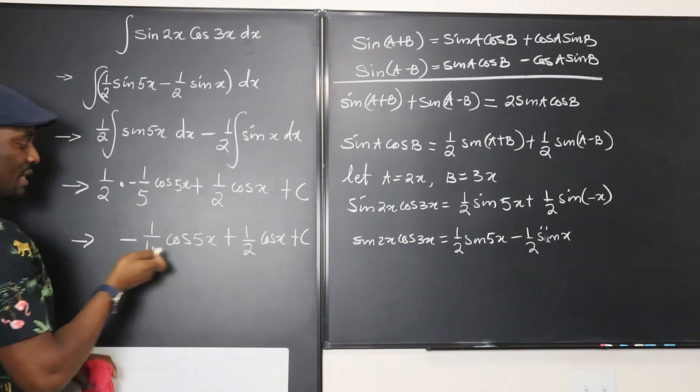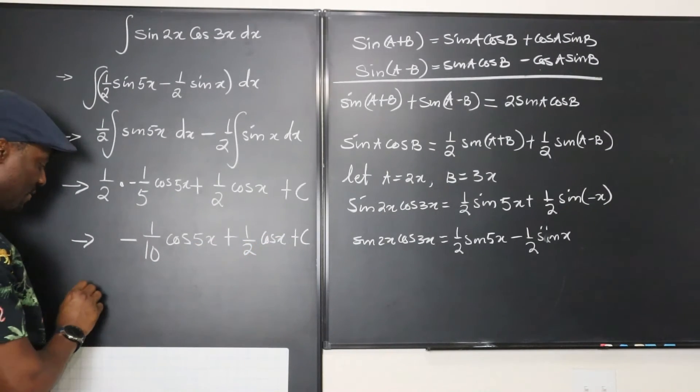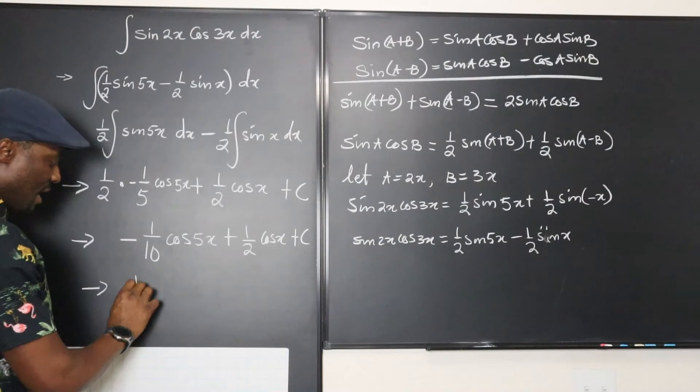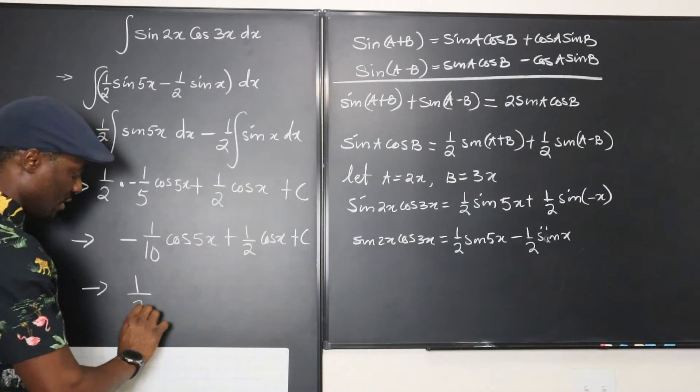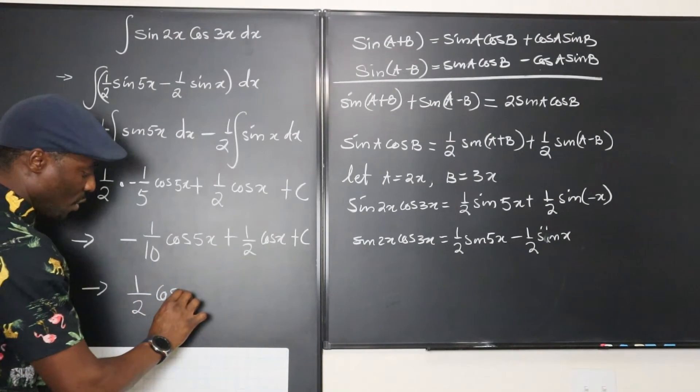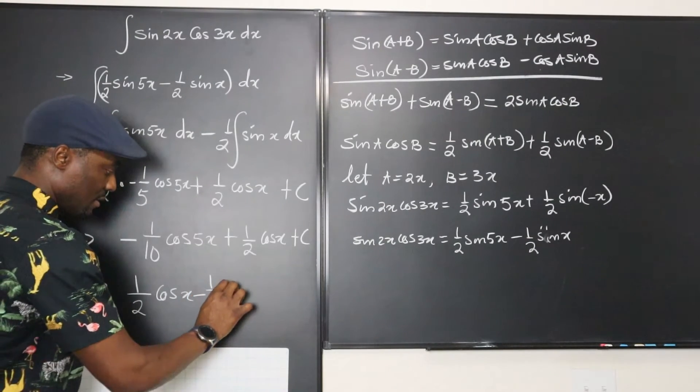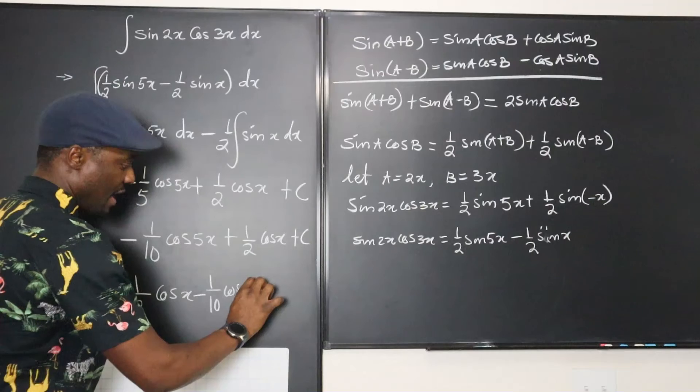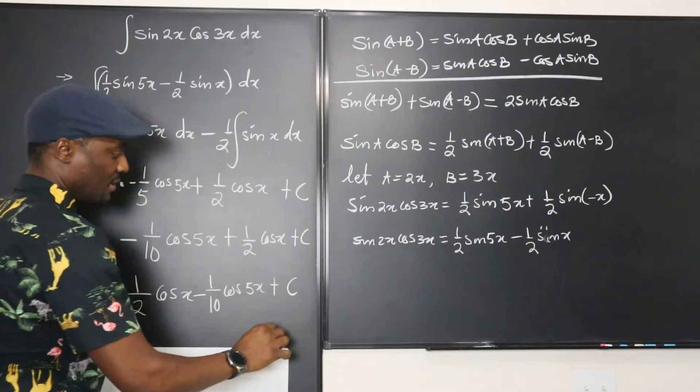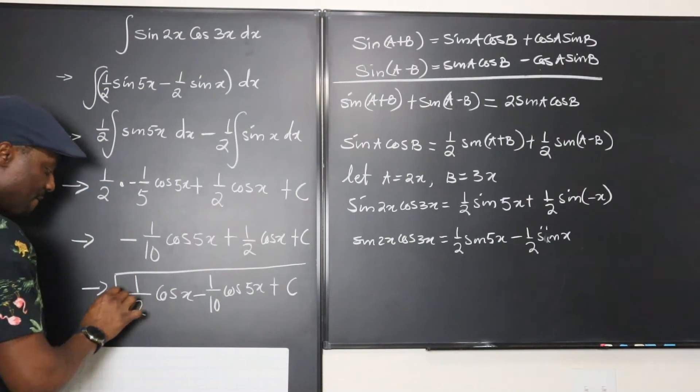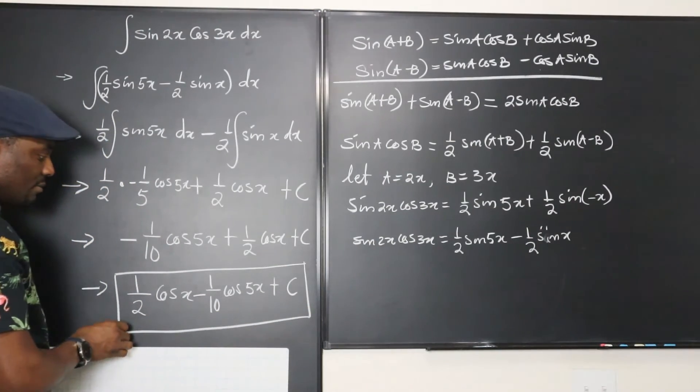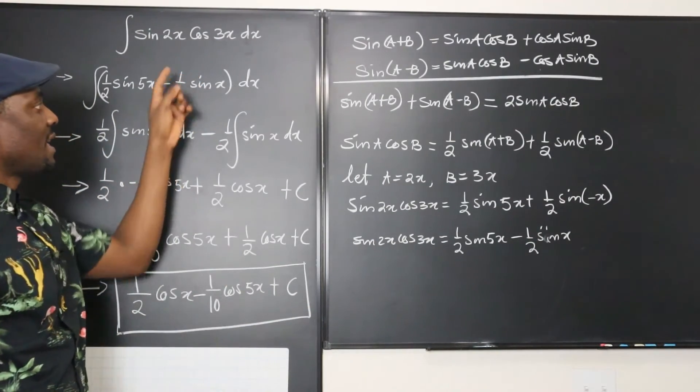Well, you might put this in front and put that behind, if you like. Otherwise, this should be a good answer. But I'm going to just write it this way. It's going to be one half of cosine x minus 1 over 10 cosine 5x plus the beautiful c. And this is the integral of that.